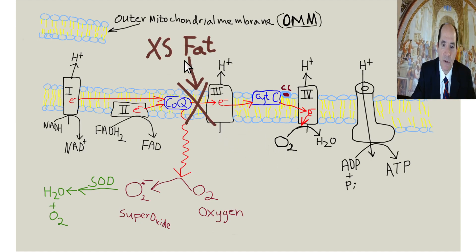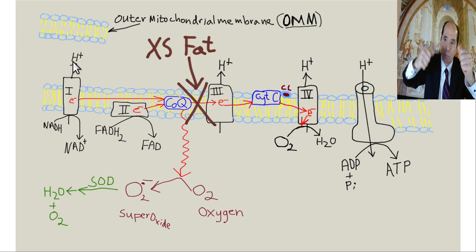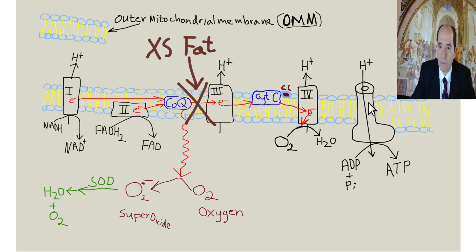So excess dietary fat, especially saturated fat, causes insulin resistance around this level between coenzyme Q and Complex 3 for pumping protons. Here's the intermitochondrial membrane, IMM. Here's the outer mitochondrial membrane, usually abbreviated OMM, and this is the intramembranous space in between these two membranes where the protons are usually pumped to build up a gradient, kind of like an air pressure gradient. Then you harvest the gradient over here at Complex 5, allowing a proton to re-enter the matrix, and the energy of that is used to couple phosphates to ADP.